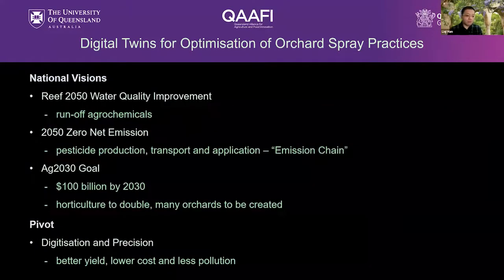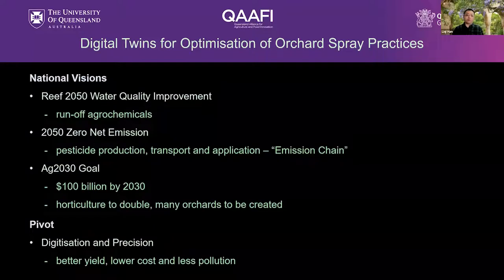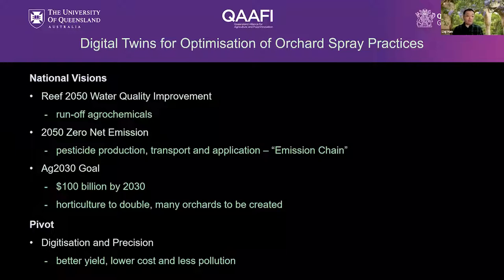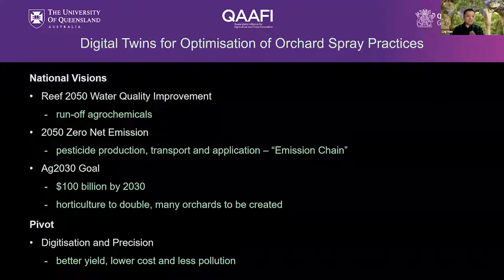The threat from off-target agricultural pesticide is very serious. At a national level, reduction of pesticide use is not only important for protection of the reef but also for the zero net emissions target — if we can minimise demand for pesticide, emissions from production, transport and application could all be reduced. But at the same time we also want horticulture to keep growing, and potentially double. I believe a strategic pivot to digital horticulture would achieve higher precision, better yield, lower cost and less pollution.